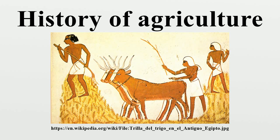Agricultural techniques such as irrigation, crop rotation, and application of fertilizers were developed soon after the Neolithic Revolution but have made significant strides in the past 200 years. The Haber-Bosch method for synthesizing ammonium nitrate fertilizer represented a major breakthrough and allowed crop yields to overcome previous constraints.